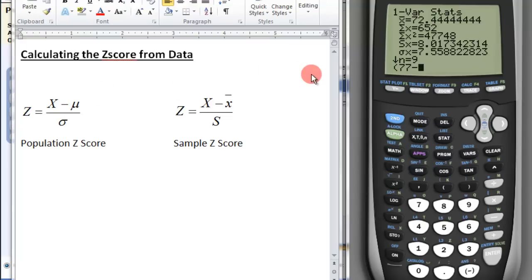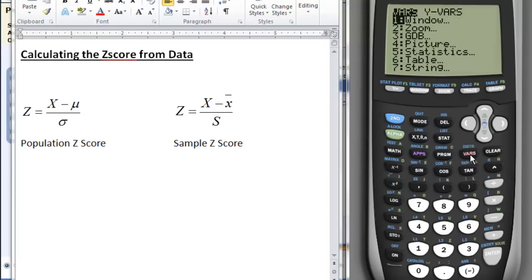So we go to vars, and if you see statistics there, you can go down to that. That allows me to pick individual values. We want the mean, which is going to be the same as x-bar, even though it's actually μ. The means are the same.